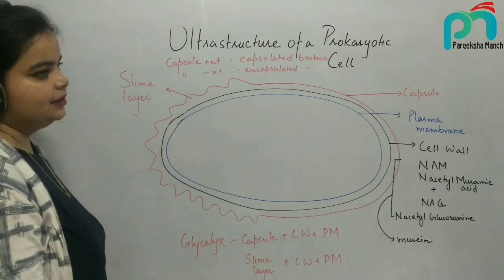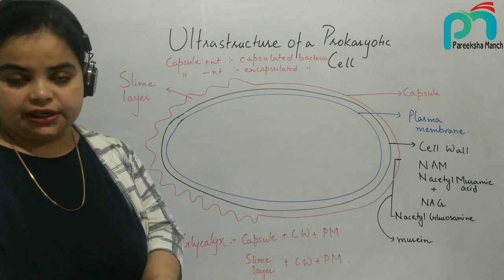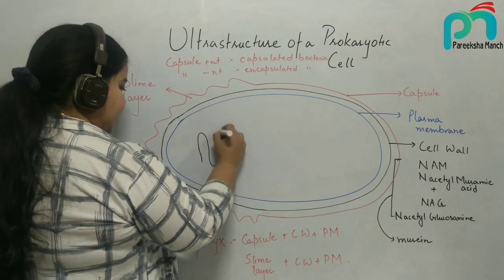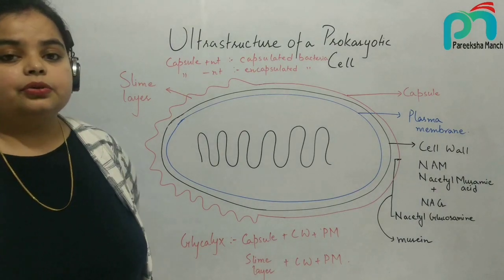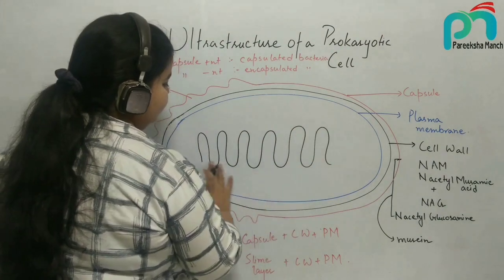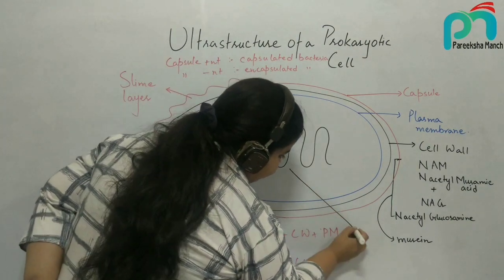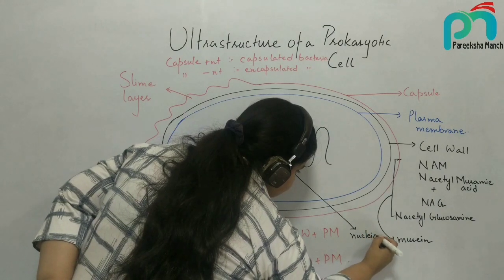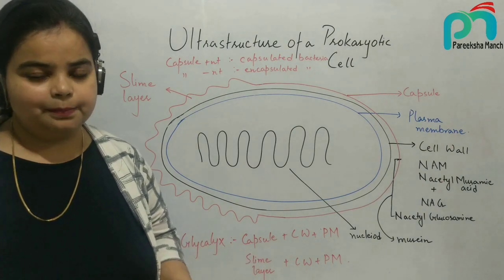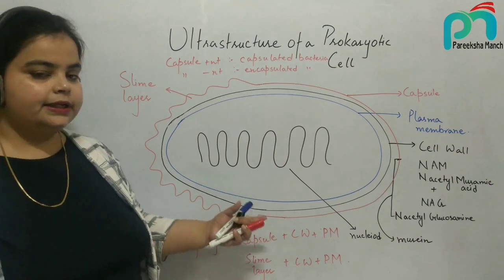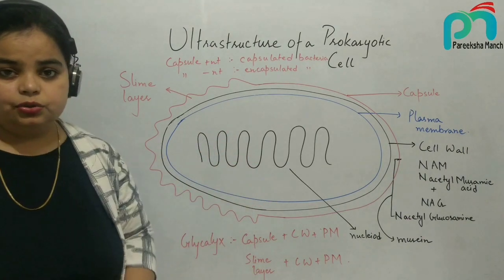Coming to the inside of the bacterial cell — if we talk about the bacterial cell, we have no specific organelle structure. The genetic material of the bacteria is present as such inside the cytoplasm, and this genetic material is known as nucleoid. This area where the DNA is present in the cytoplasm is known as nucleoid.